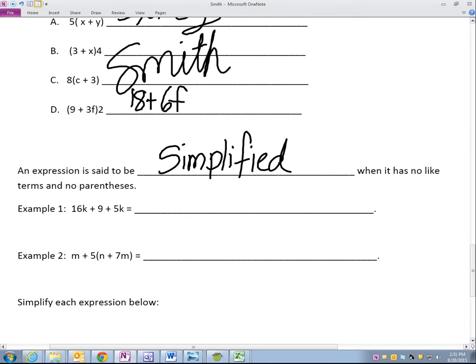An expression is said to be simplified. It is said to be simplified when it has no like terms. No like terms. All right. A like term. Go ahead and write this here.